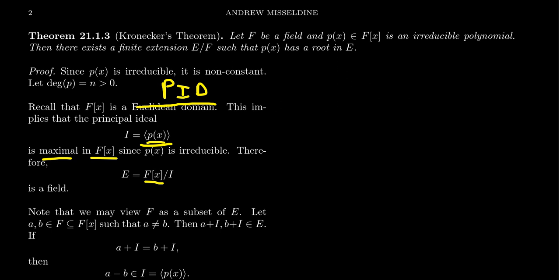So F[x] mod I gives you a field, because a commutative ring modded out by a maximal ideal gives you a field. And so this is our candidate E — E is the field we are going to describe. Now there are a few things we have to say about E. It's a field, but is it a field extension? Can we view F inside of E?